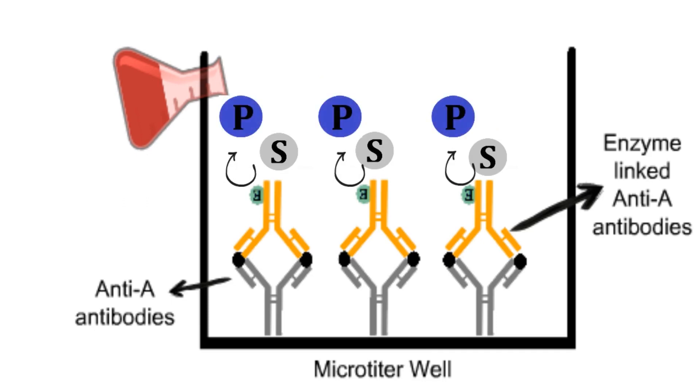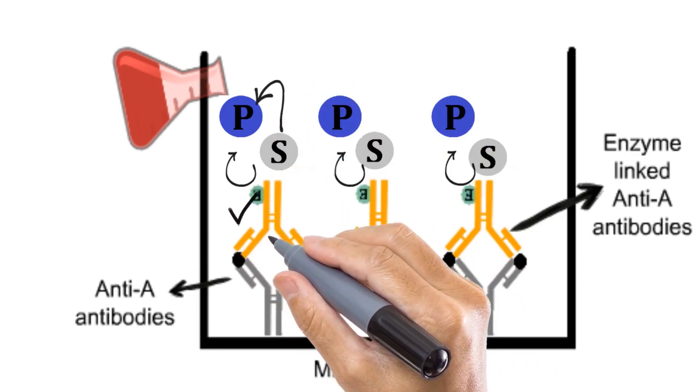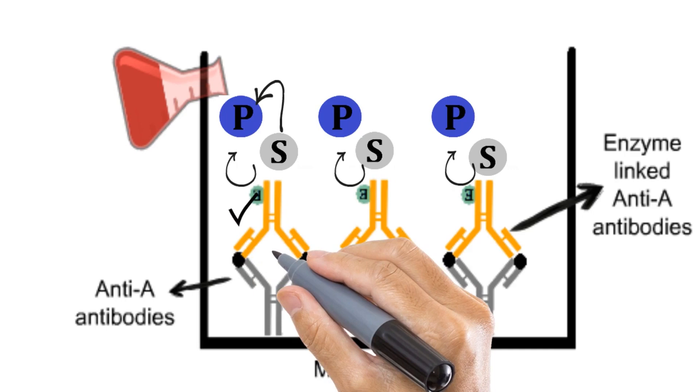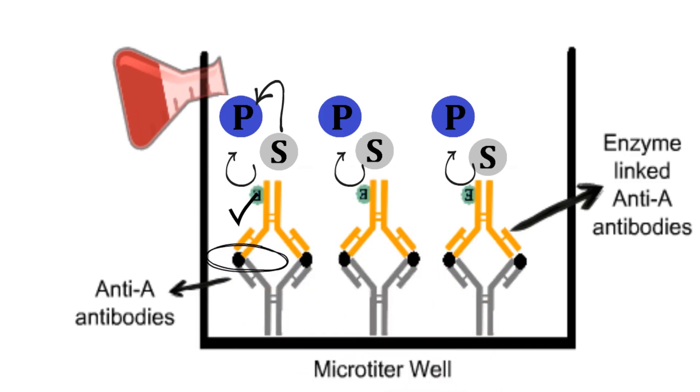Now, what does the appearance of color indicate? Since the color appeared, it means the substrate is converted into the product, which means the enzyme-linked antibodies are present in the well. And why are enzyme-linked antibodies present in the well? This is because the A antigen was bound to the specific antibodies.